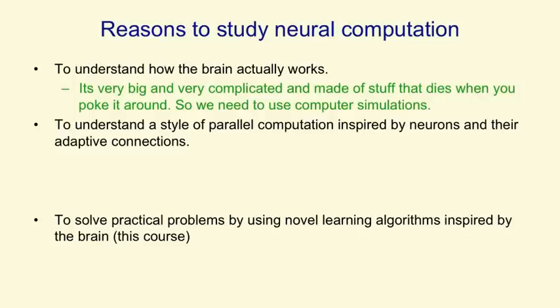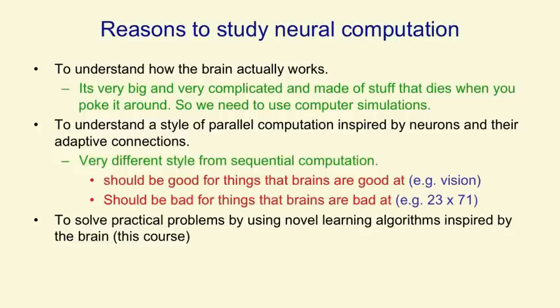The second is to understand a style of parallel computation that's inspired by the fact that the brain can compute with a big parallel network of relatively slow neurons. If we can understand that style of parallel computation, we might be able to make better parallel computers. It's very different from the way computation is done on a conventional serial processor. It should be very good for things that brains are good at, like vision, and also bad for things that brains are bad at, like multiplying two numbers together.